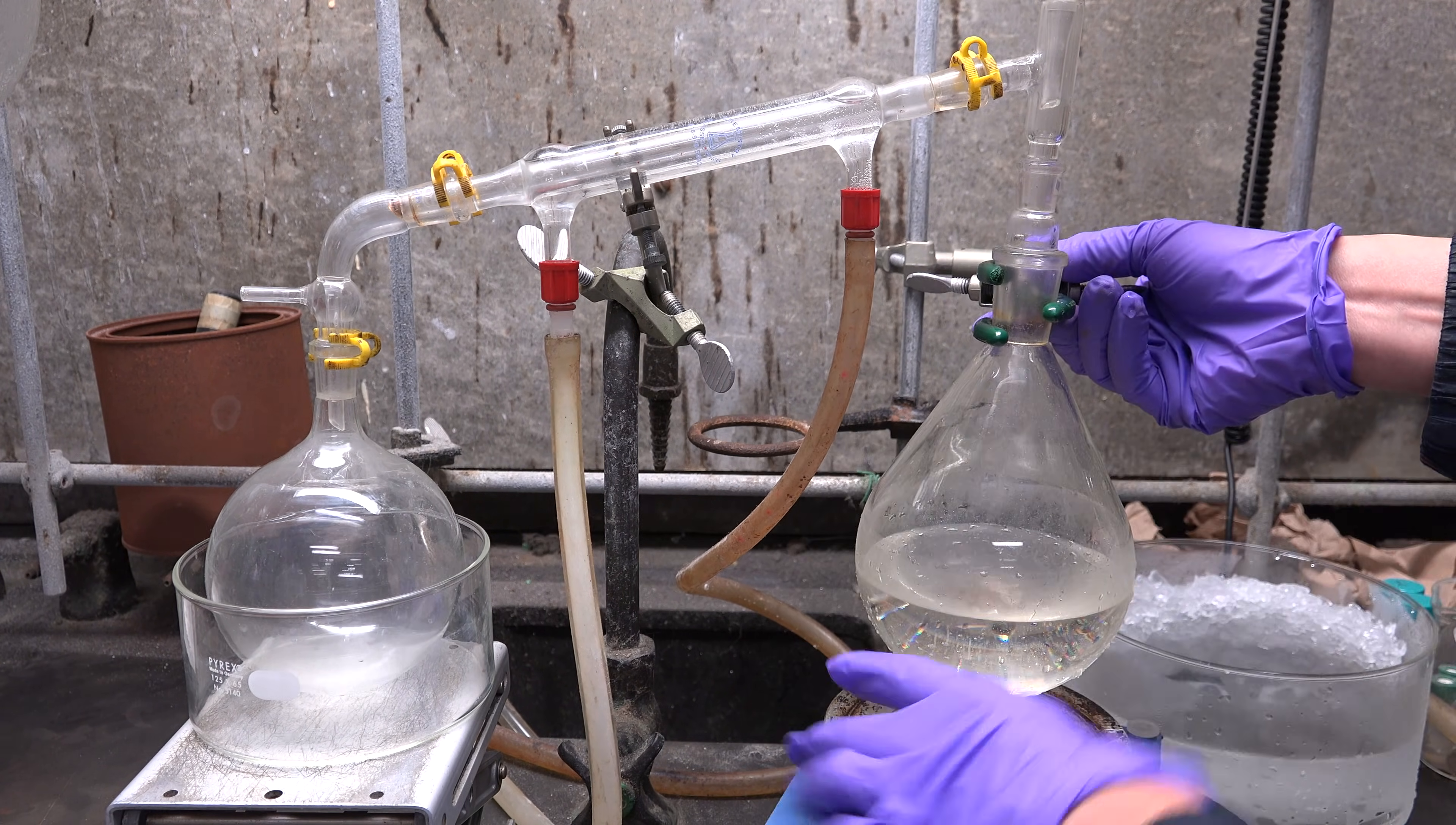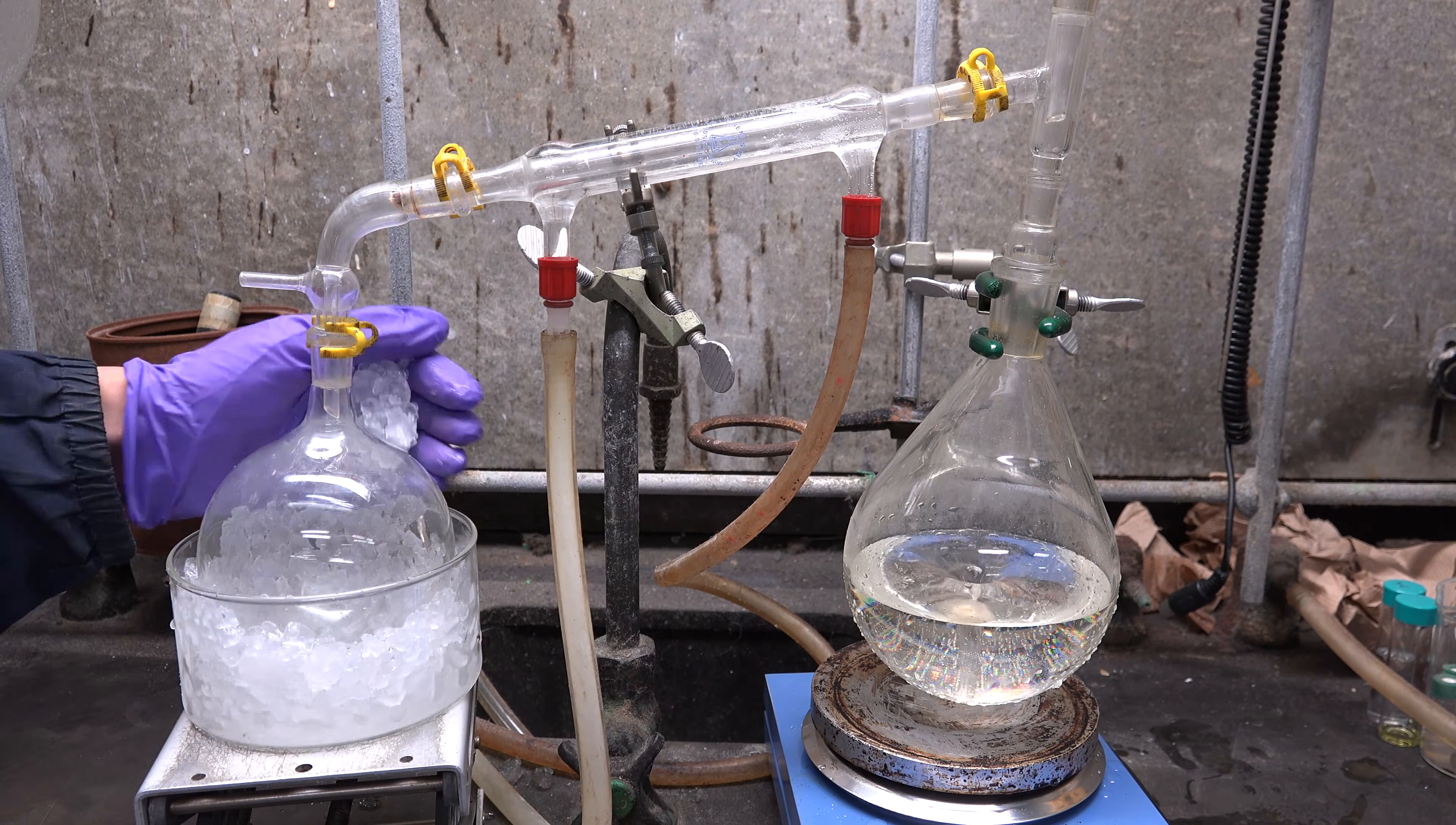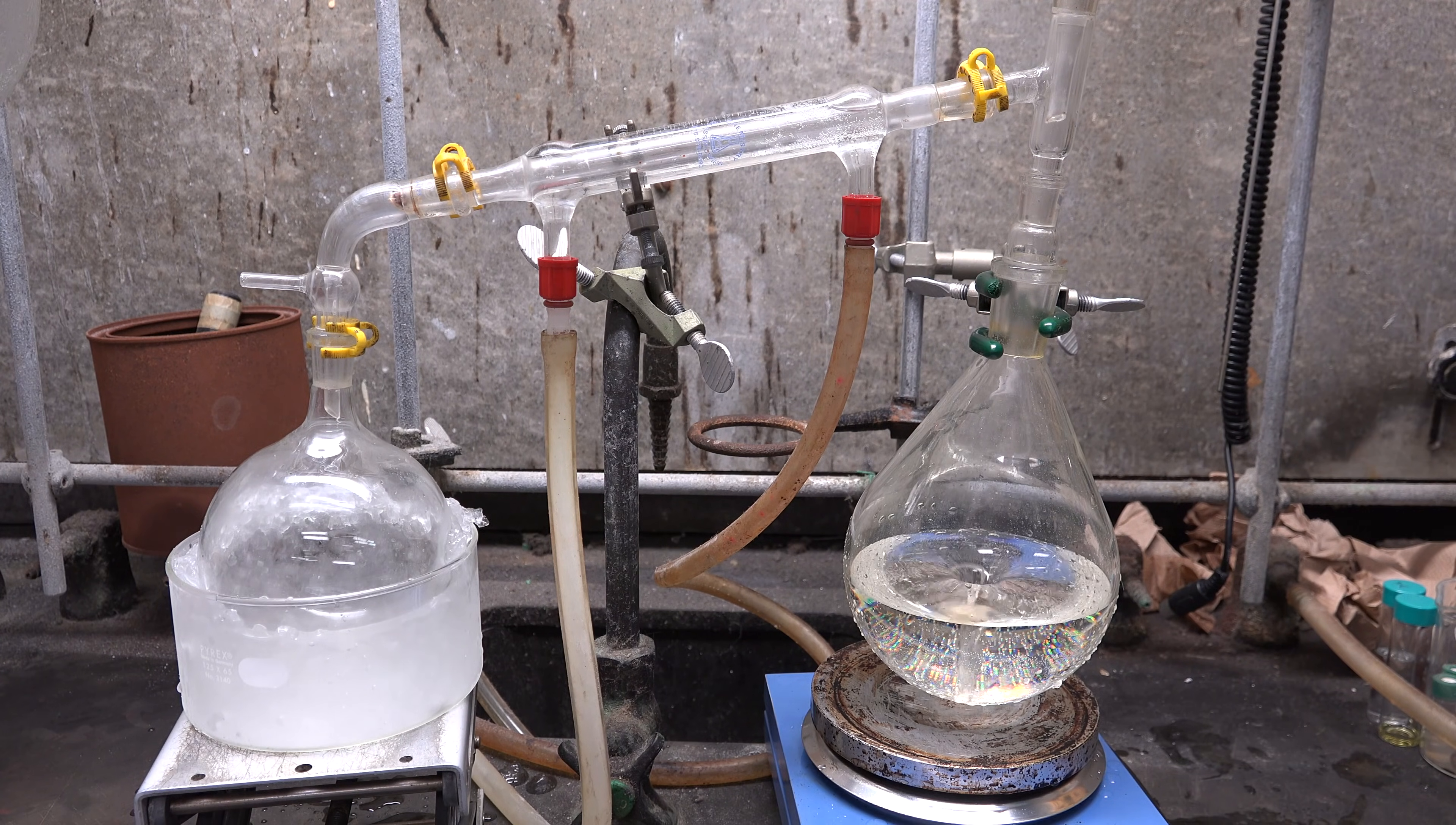Now we remove the ice water bath and pack our receiver flask in ice water. Looking back now this step was totally redundant. We just need to pack the receiver in ice water but the boiling flask can remain as is since we'll be heating it up later.